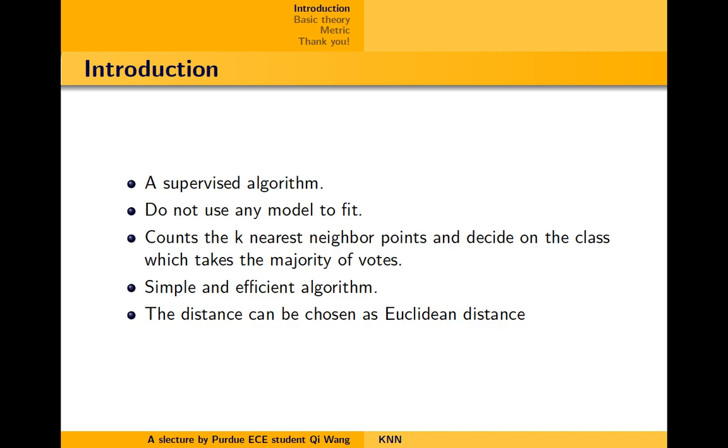The k-nearest neighbors is a supervised algorithm which basically counts the k-nearest features to determine the class of a sample. The classifier is non-parametric and does not use any model to fit. Given a set of points, KNN counts the k-nearest neighbors and decides on the class which takes the majority of votes. It is a simple and efficient algorithm that only calculates the distance of a new sample to the nearest neighbors and categorizes based on majority votes of k-nearest neighbors. The distance can be chosen as Euclidean distance.